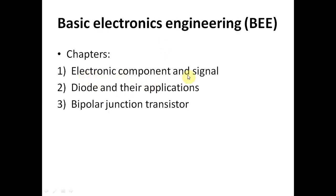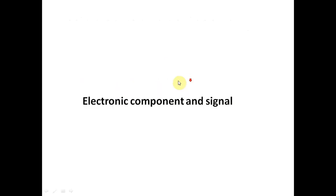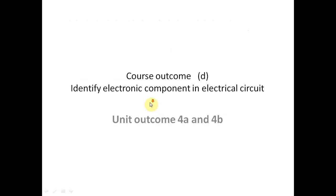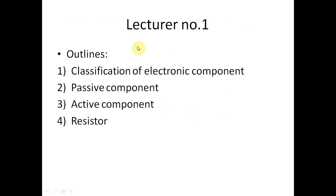Chapter number one is Electronic Components and Signals. The outlines of the first lecture are: first, classification of electronic components; second, passive components; third, active components; and fourth, resistors.